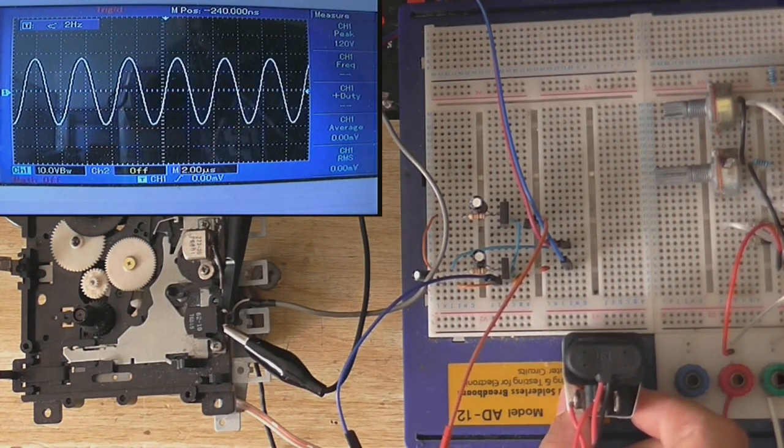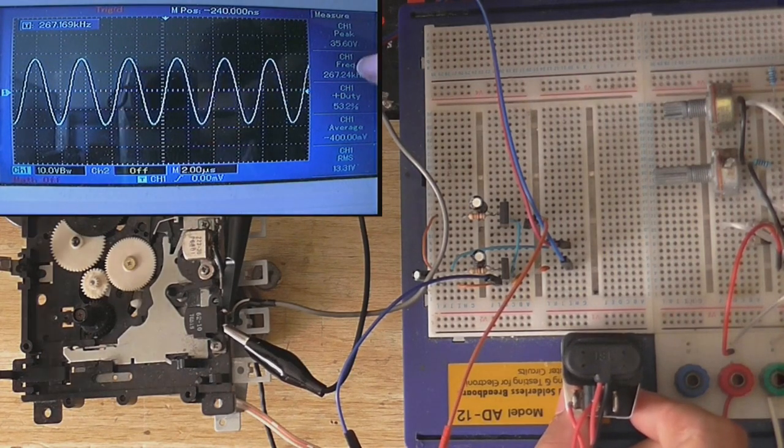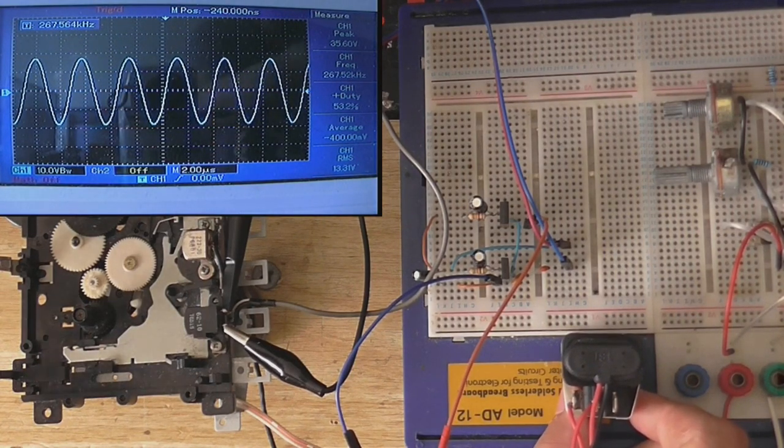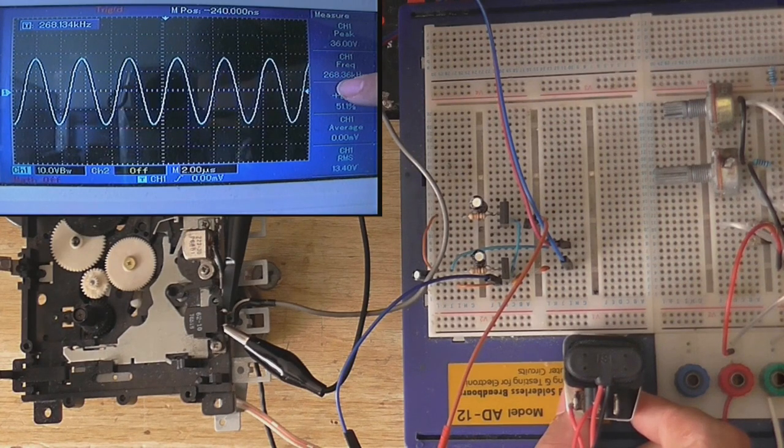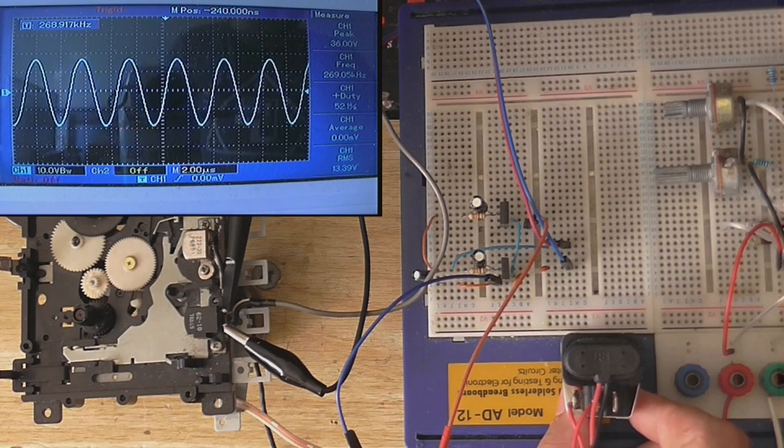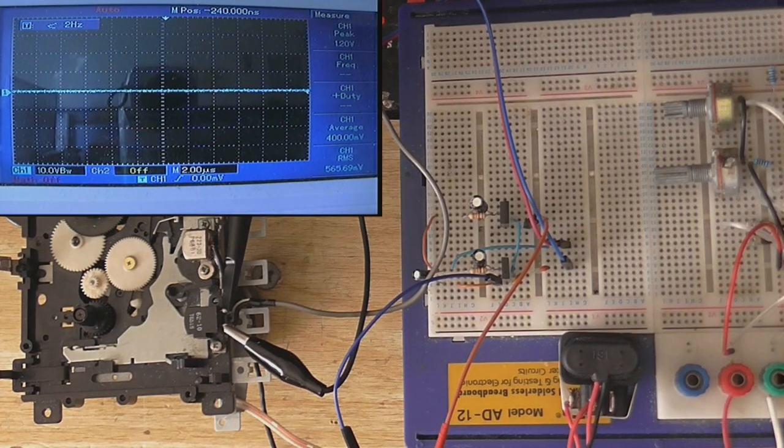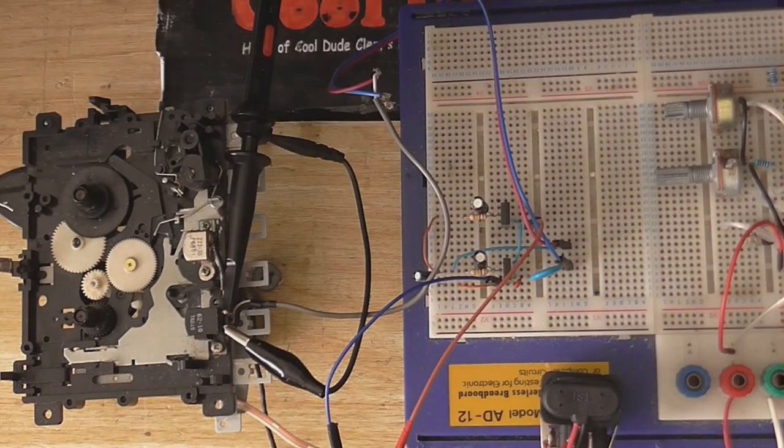I've got everything set up and ready, so let's just give it a quick power on, see if anything happens. Oh yeah, look at that. Well, it's definitely working. We're getting about 268 kHz though. That's rather high. And 36 volts into our erase head. So that definitely works. Frequency's rather high though.